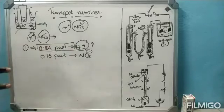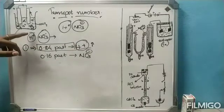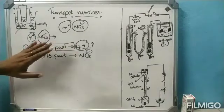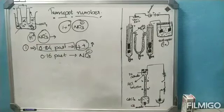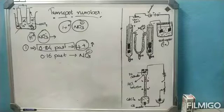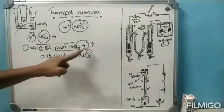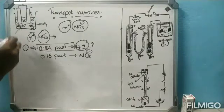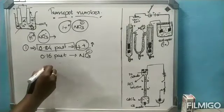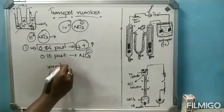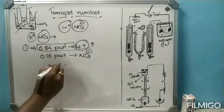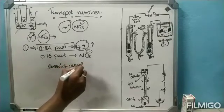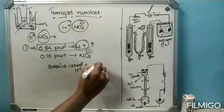0.84 part of this current is carried due to the movement of H⁺ ions. Both H⁺ and NO₃⁻ ions are present, and the total electricity passed through this solution equals the current carried by H⁺ plus the current carried by NO₃⁻.